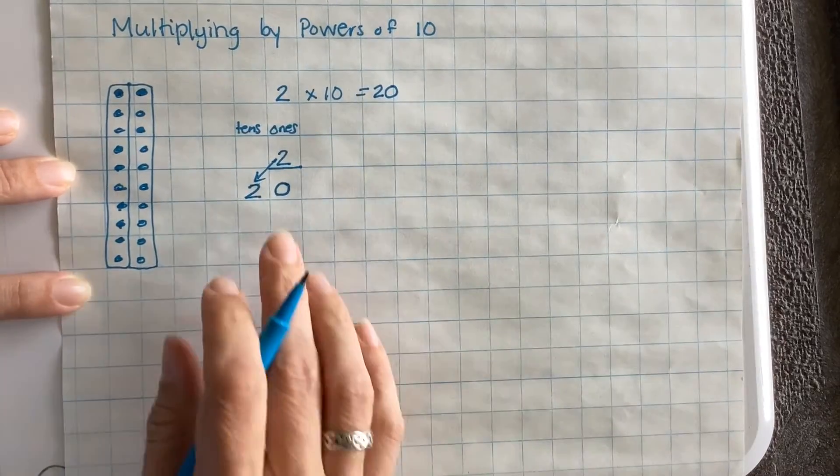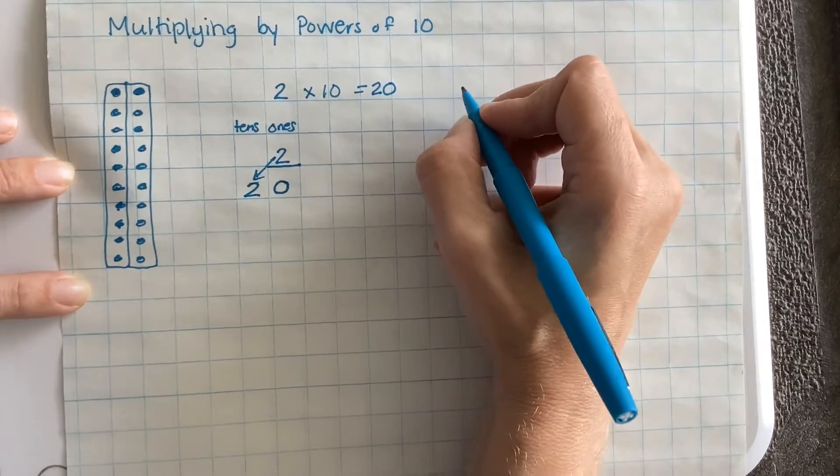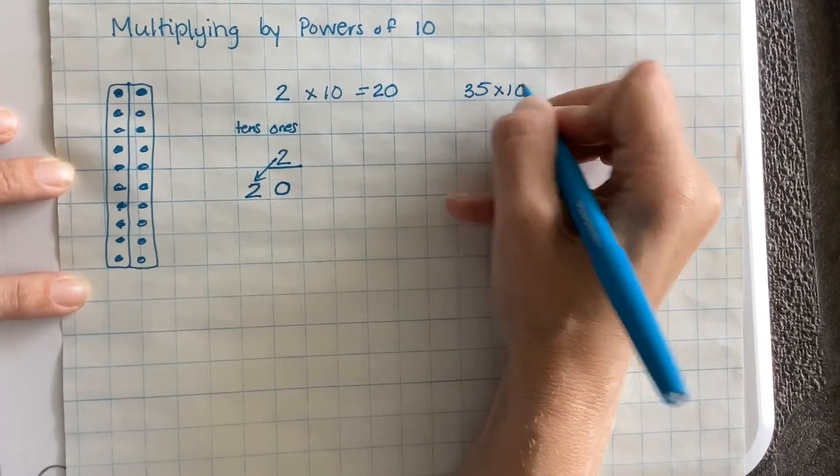And we're going to see a little bit of a pattern happen there. If I use the same strategy and I say, let's say, 35 times 10.